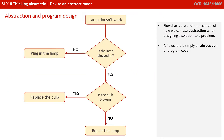Flowcharts are another great example of how we can use abstraction when designing a solution to a problem. A flowchart is simply an abstraction of our program code — the logic and flow, the algorithm of how it works.